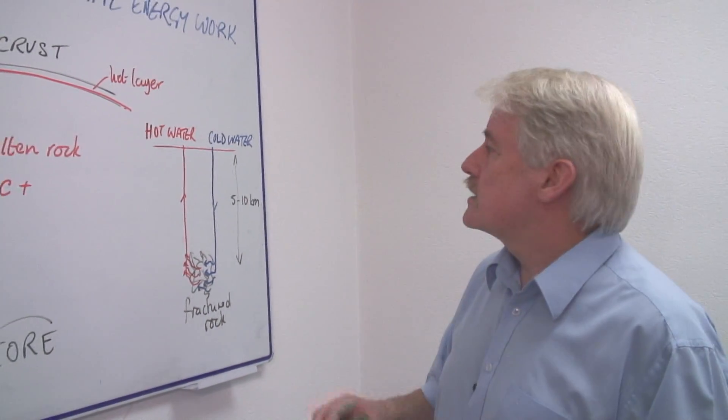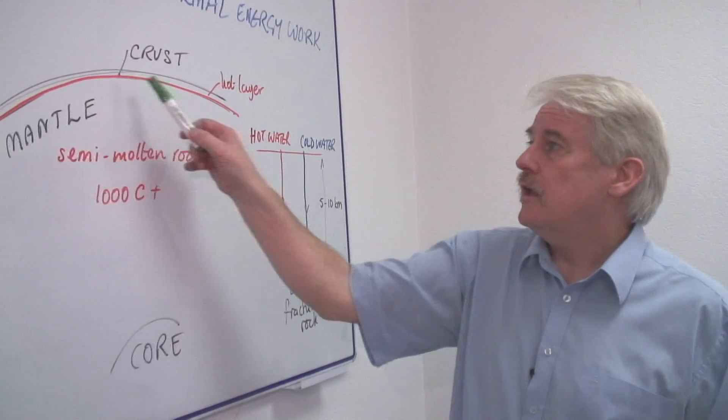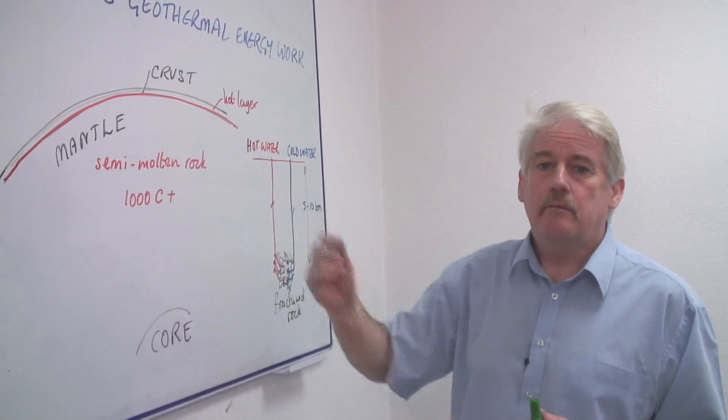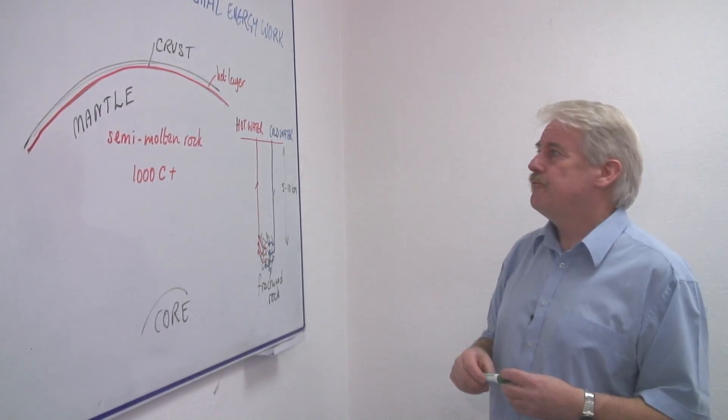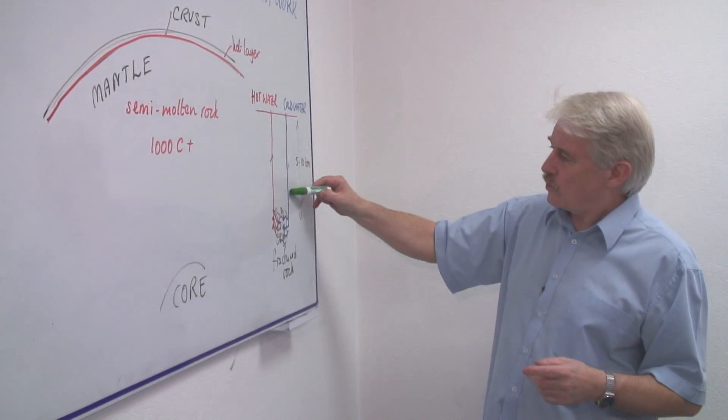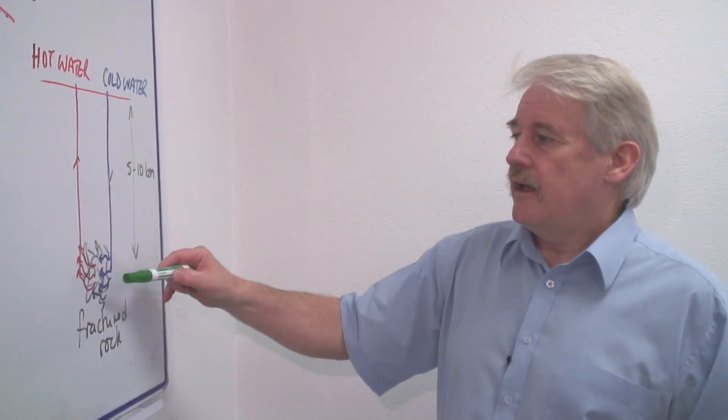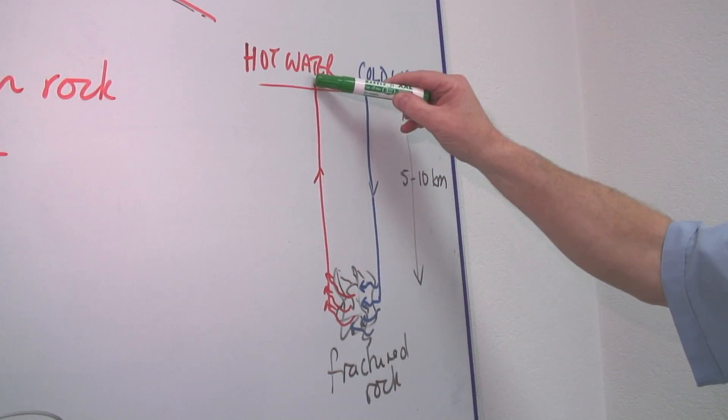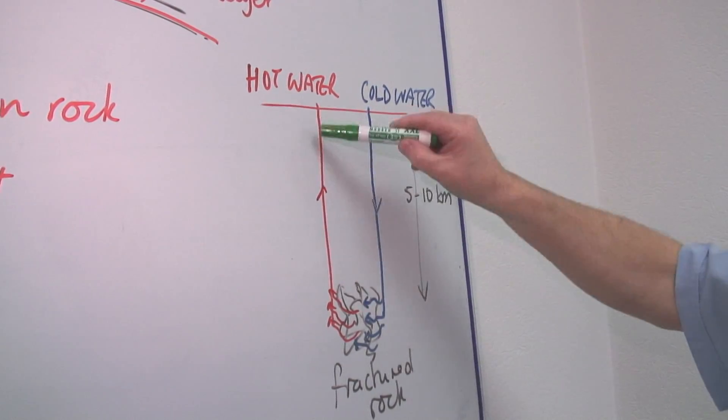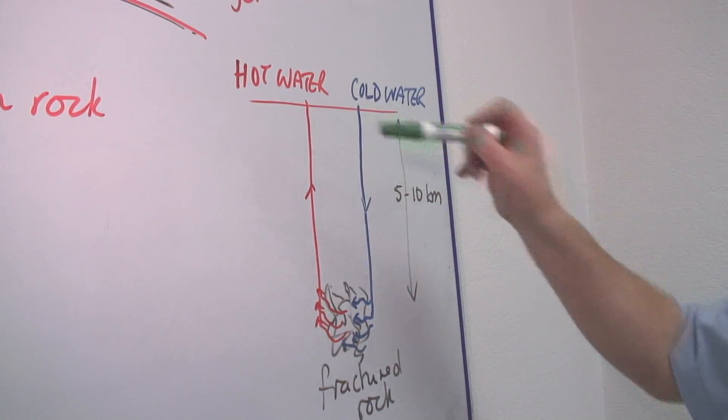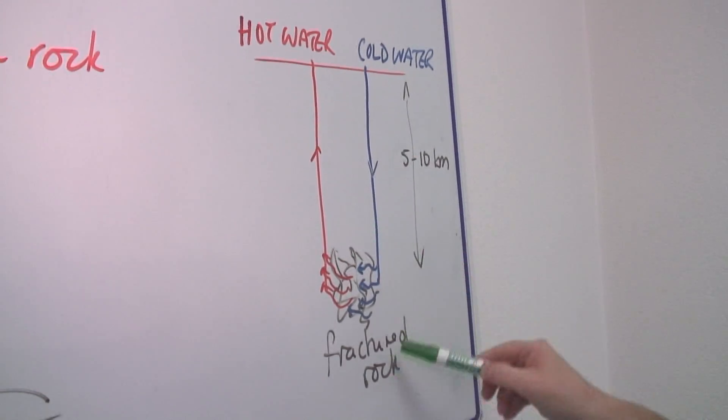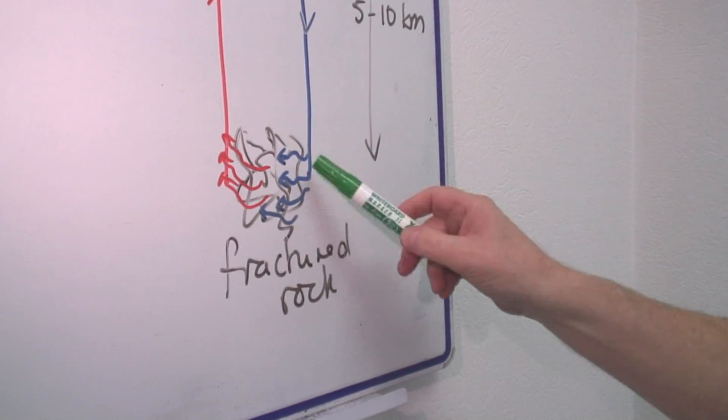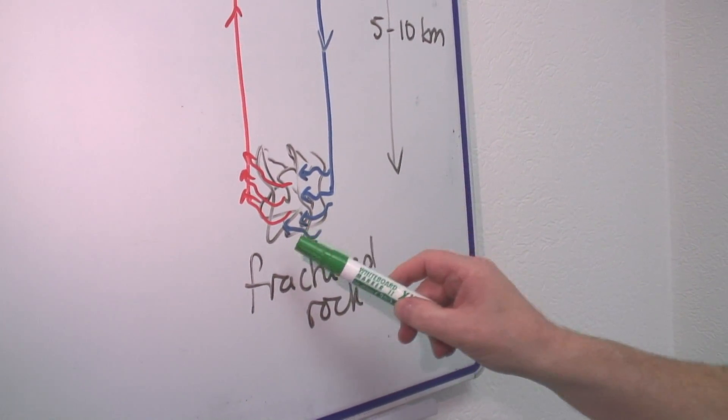What happens is this hot rock here is continually heated by the mantle. And therefore if we push cold water down into this area, then the water that comes back up if we create another up well, then whatever comes up should be hot. Because this here will be a place where the cold water comes in contact with hot rock.